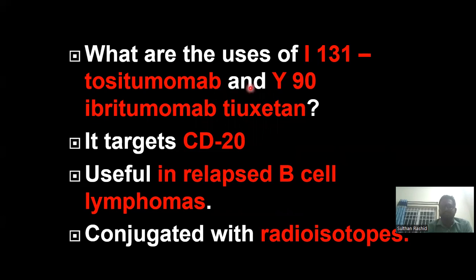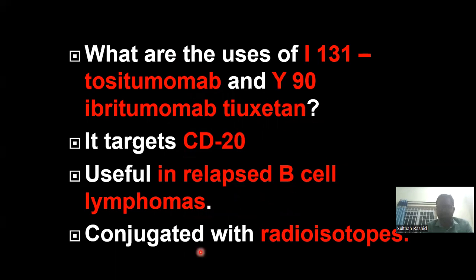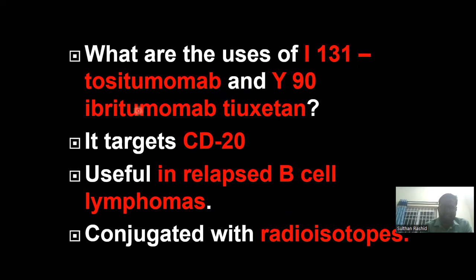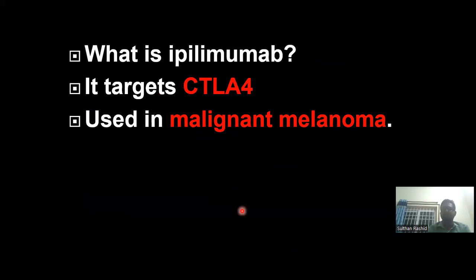Now comes tositumomab and ibritumomab. These drugs act against CD20, which is expressed particularly on B-cell lymphomas. These drugs are used in relapsed B-cell lymphomas and are conjugated with radioisotopes — iodine-131 is conjugated with tositumomab, and yttrium-90 is conjugated with ibritumomab — to treat B-cell lymphomas.